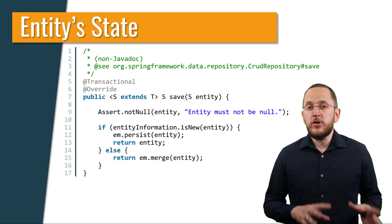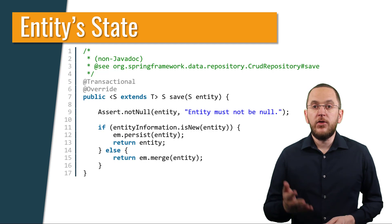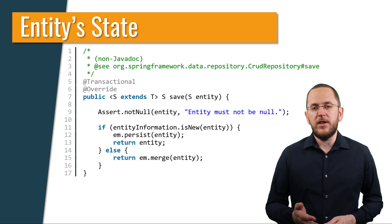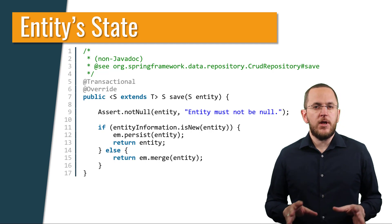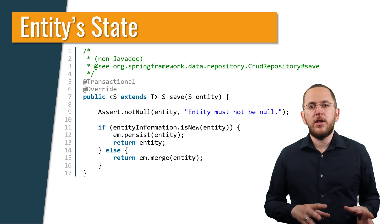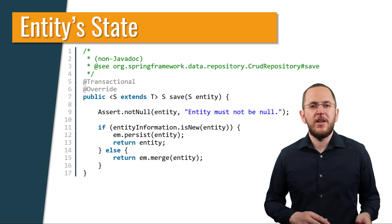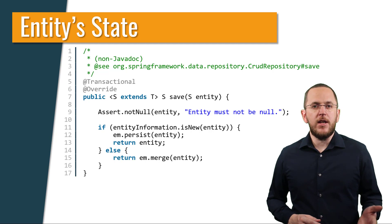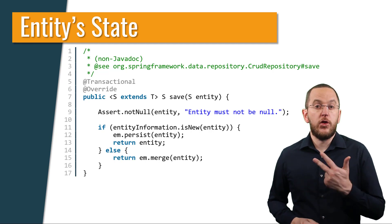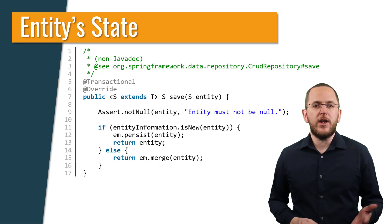To decide which of these two operations it has to perform, Spring Data JPA needs to find out if the entity object represents an existing database record or not. This is called state detection and gets triggered by the save method in Spring Data JPA's simple JPA repository class. The call of the isNew method returns the detected state. Spring Data JPA supports three different strategies to detect the state of an entity, which I will show you in the following sections.